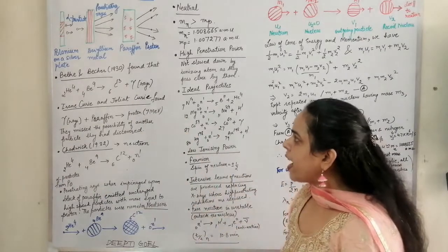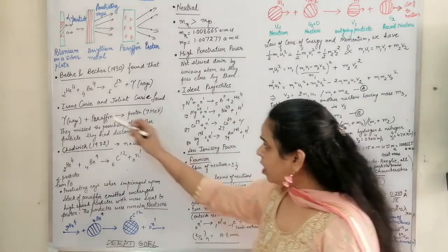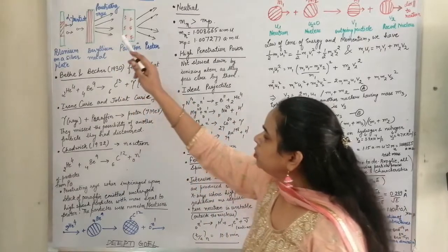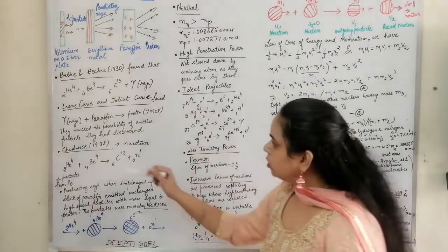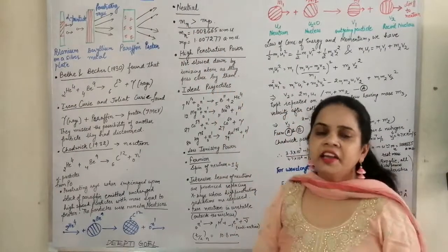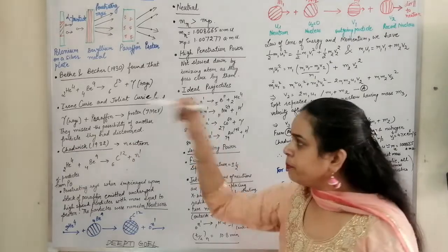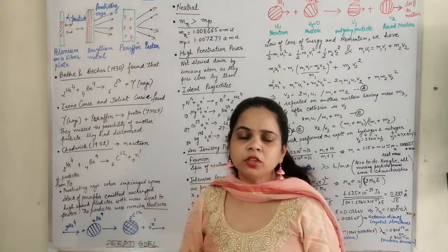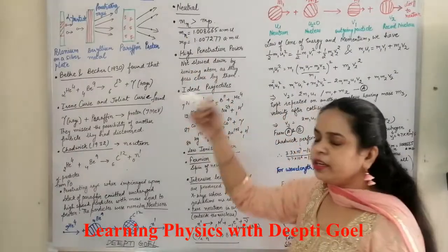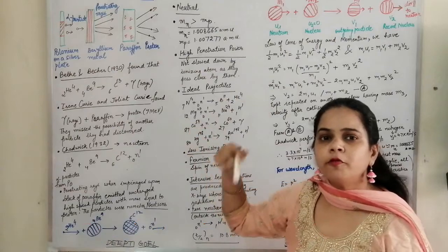This experiment was further carried out by Irene Curie and Joliot Curie. They took the gamma rays that had penetrated out of the beryllium metal and made them strike paraffin wax. When the gamma rays struck the paraffin wax, some fast-moving protons were ejected. They thought that protons of the order of seven mega electron volts were coming out. In doing so, Irene Curie and Joliot Curie just missed the chance of discovering a new particle — the neutron — mistaking it for protons.